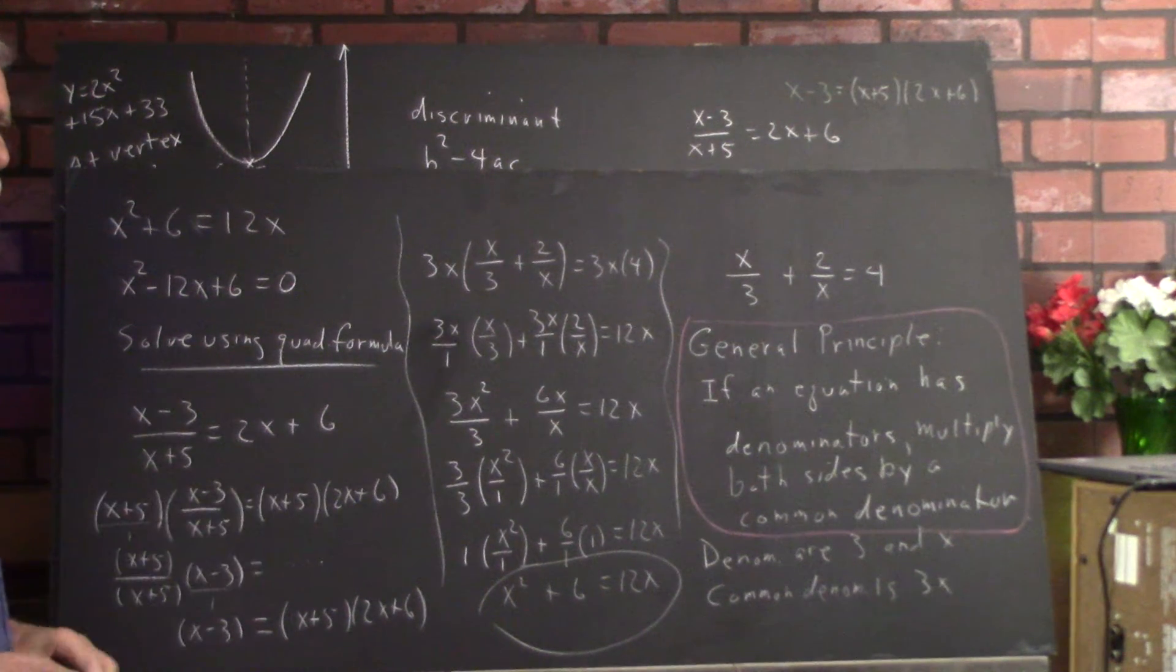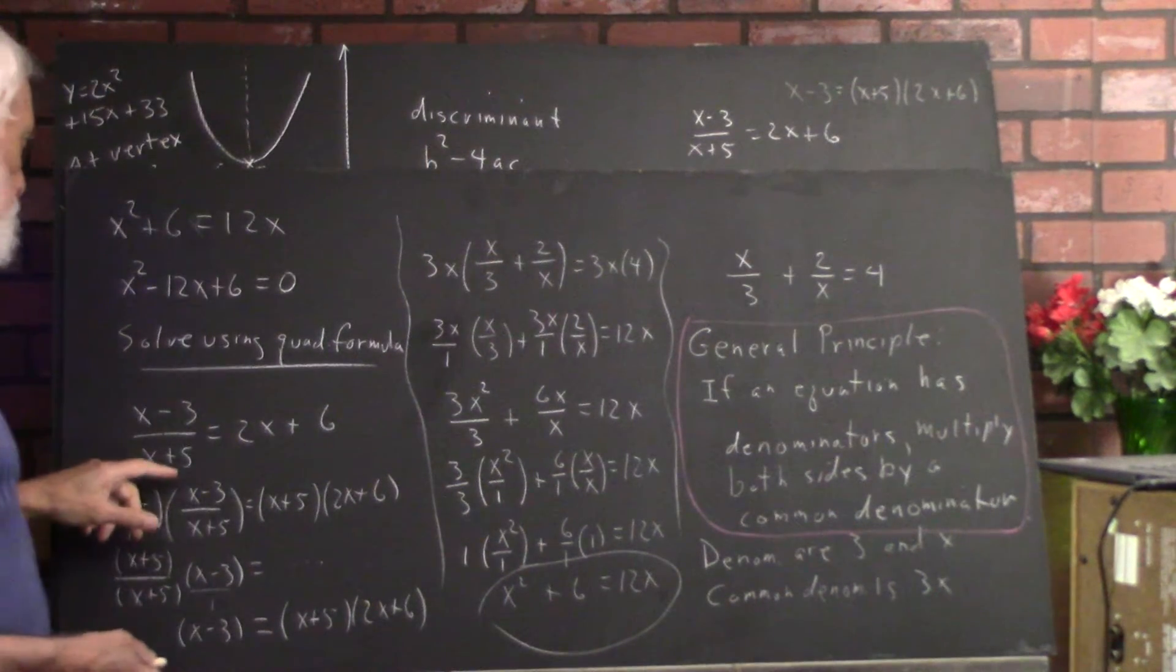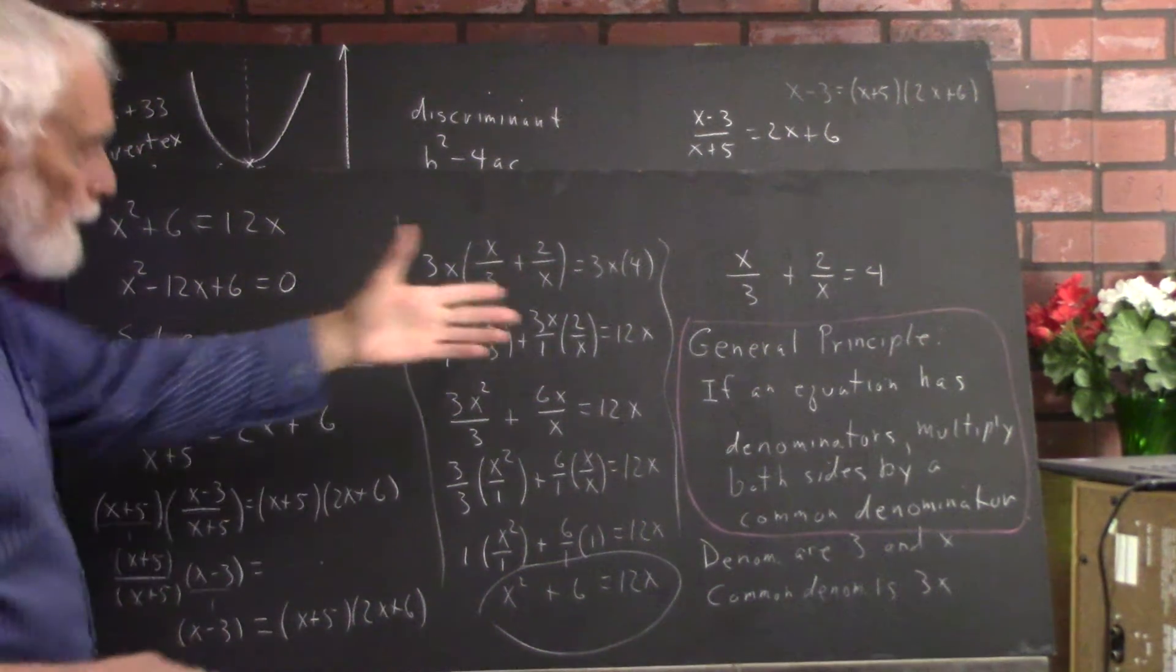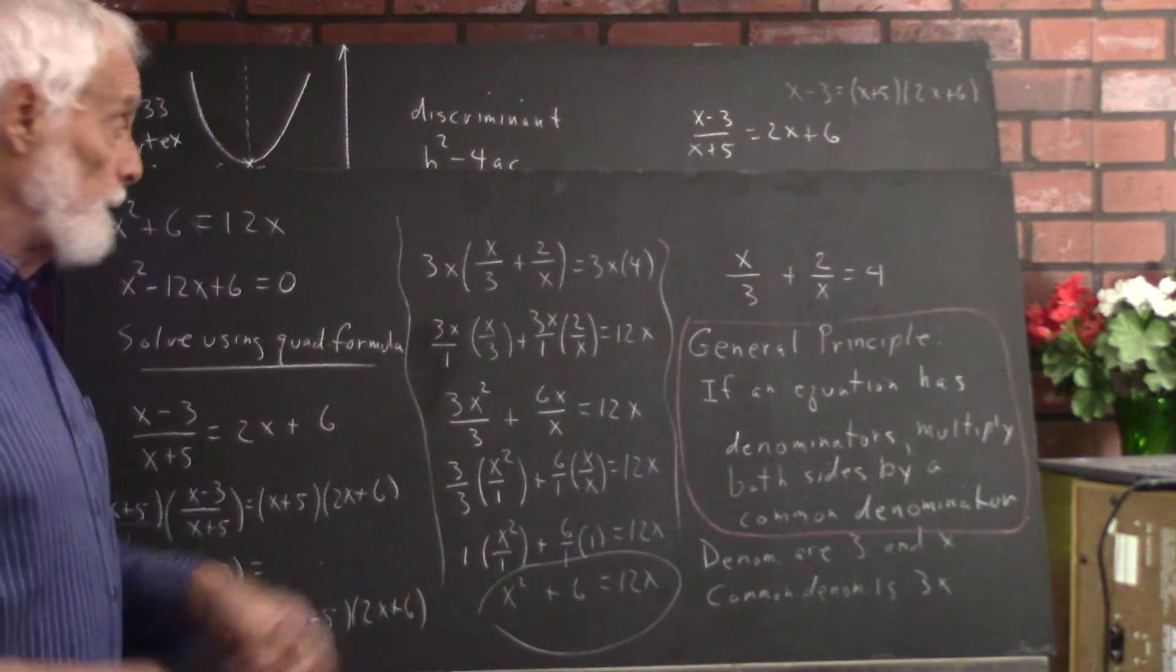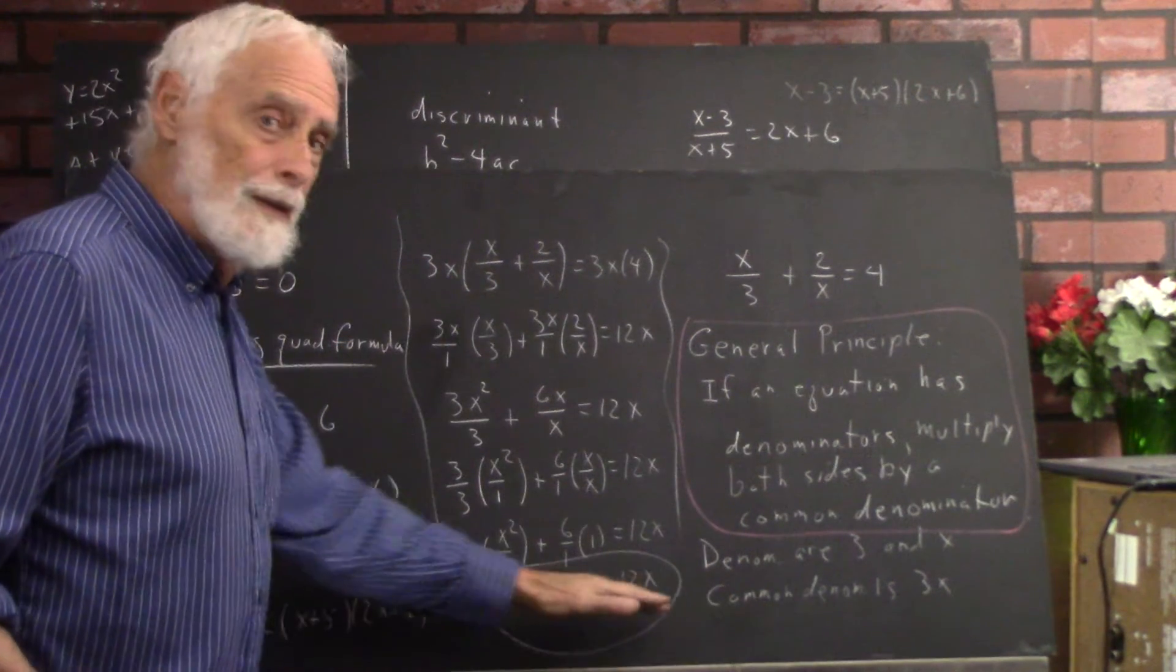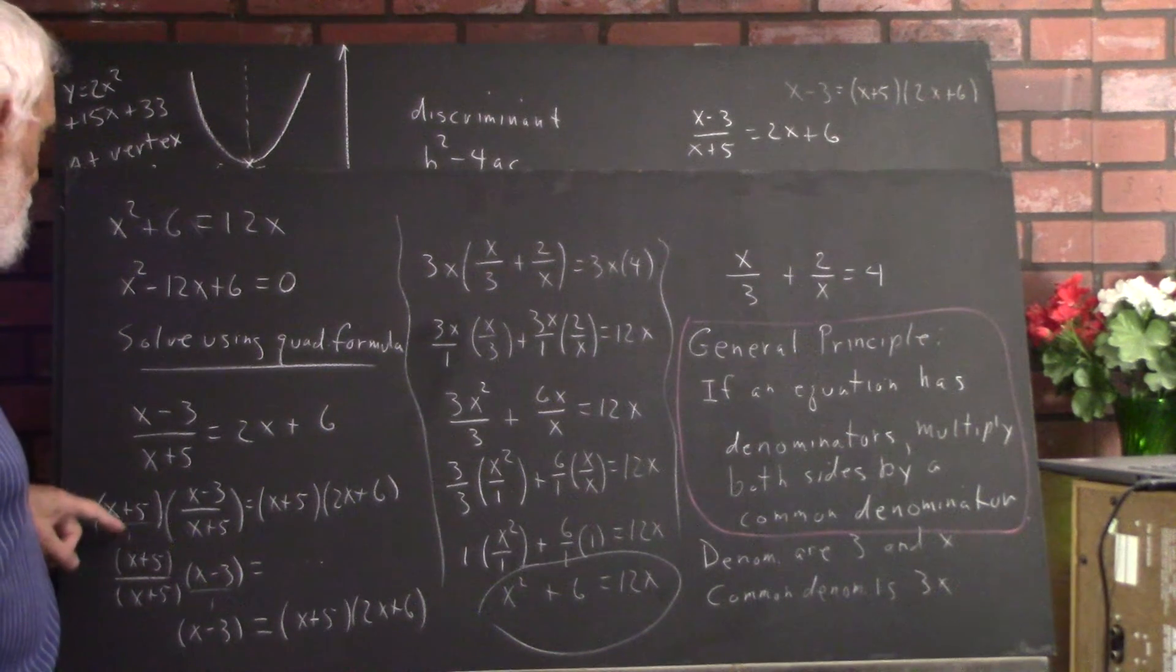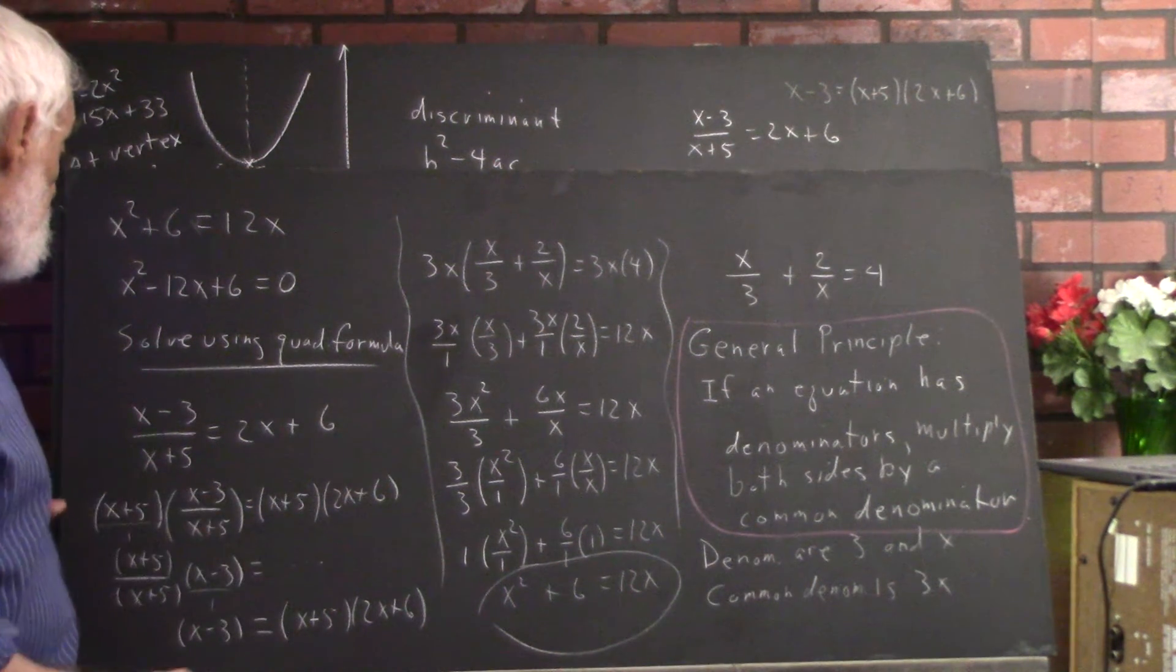x minus 3 over x plus 5 equals 2x plus 6. We multiply both sides of this equation by the denominator. Now, I said common denominator. Well, there's one denominator, there's no other denominator, so that's the denominator. So I could have expanded my general principle by saying, or if there's just one denominator, we multiply both sides by that denominator. Just as in this case, that's going to clear out all your denominators and make the equation much simpler to look at and work with. Okay, so we multiply both sides by x plus 5, and I'll just write that on this side as x plus 5 over 1, and just an x plus 5 over here means the same thing.